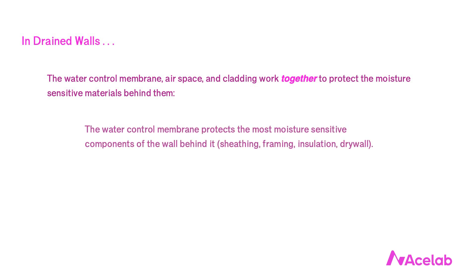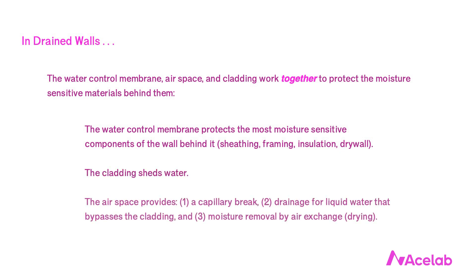The water control membrane protects the most moisture-sensitive components of the wall: sheathing, framing, insulation, and drywall. The cladding sheds water, and the airspace between them provides: one, a capillary break; two, drainage for liquid water that bypasses the cladding; and three, moisture removal by air exchange drying. It's important to note that the cladding will dry into this airspace when it gets wet after rain, but the interior parts of the wall will also dry into this space.